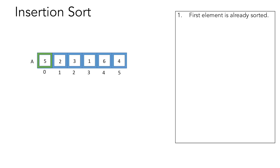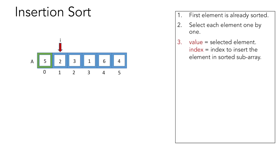We start selecting elements one by one starting at index 1, using variable i to traverse the array. We use two more variables: value, which stores the value of the selected element, and index, which will eventually contain the position where we insert the element in the sorted sub-array. Initially index equals the index of the selected element, and value will have the element 2.